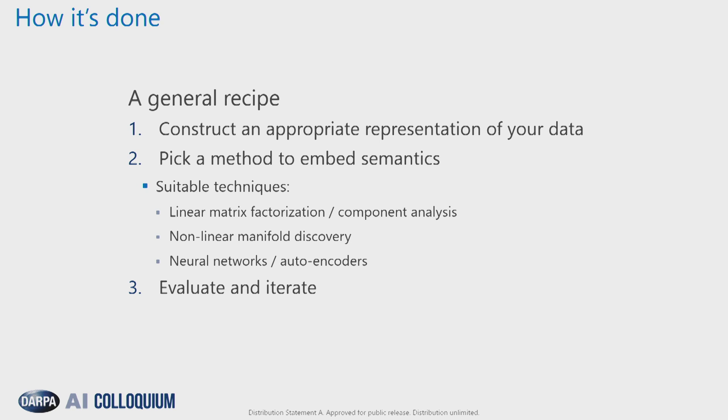So how do we do this? Here's a general recipe. The first step is we need to construct an appropriate representation of our data — it must be able to support the conclusions we want. If we have two similar entities, they must be similar in the data. One command and control server must be measurably similar to another command and control server, but also measurably different from something it's not akin to — a command and control server must be measurably different from a VPN. This is really the critical place to start building traction for AI to have a greater impact.